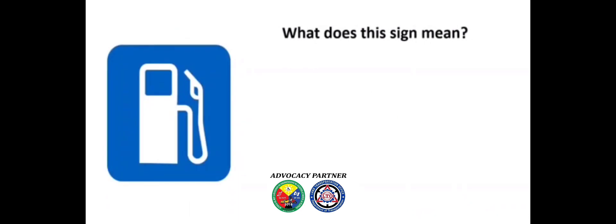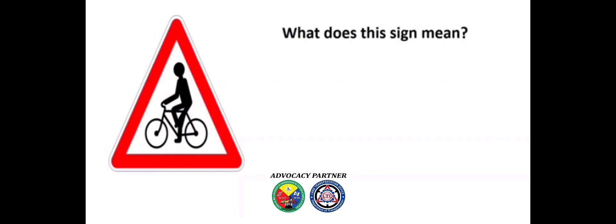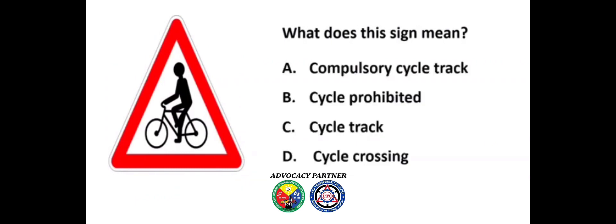What does this sign mean? A) Gas station, B) ATM, C) Air filling, D) Hospital. Answer: A) Gas station. What does this sign mean? A) Compulsory cycle track, B) Cycle prohibited, C) Cycle track, D) Cycle crossing.